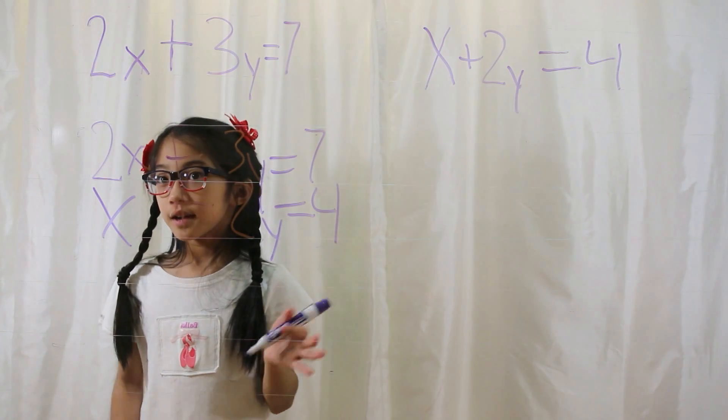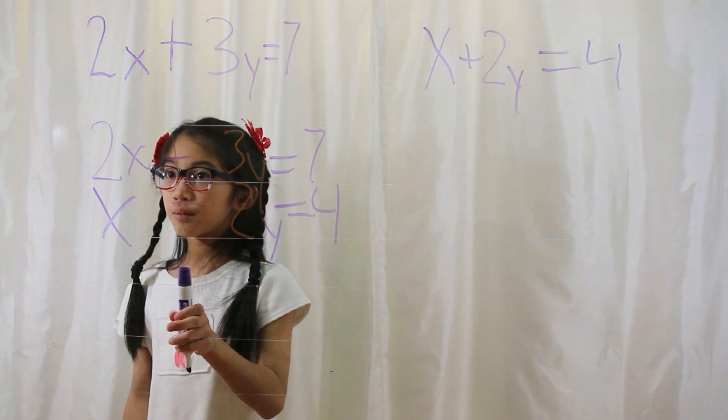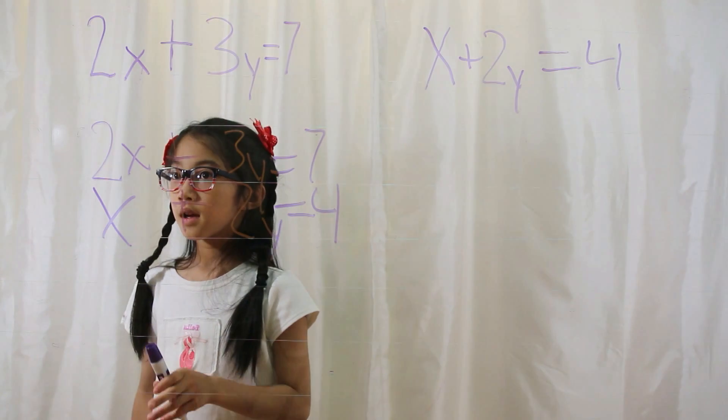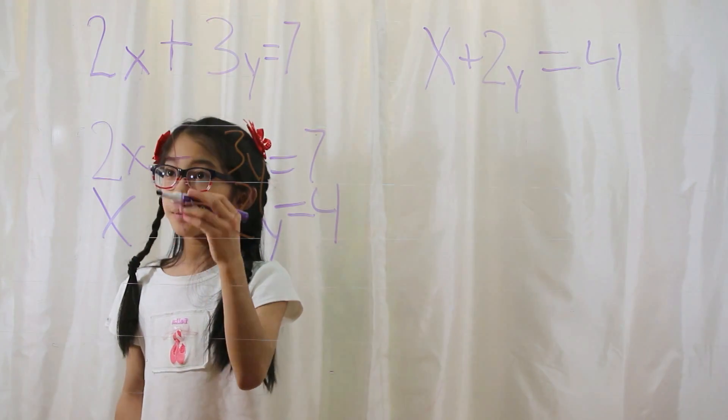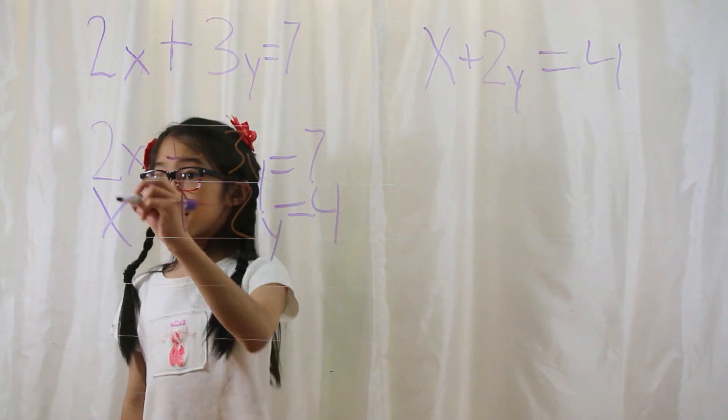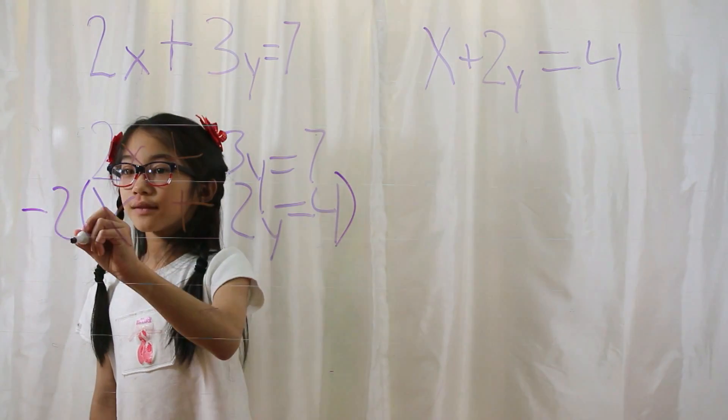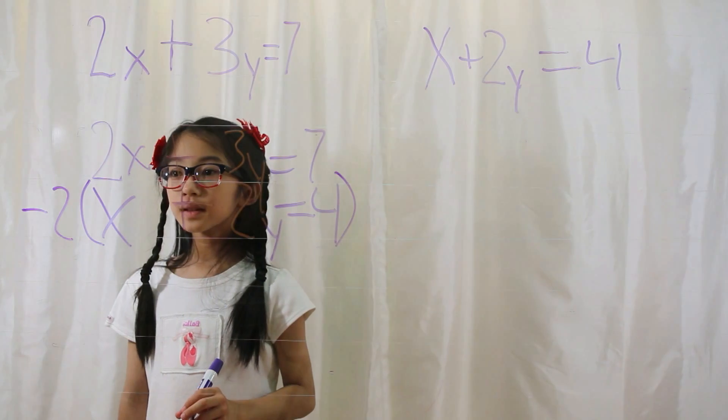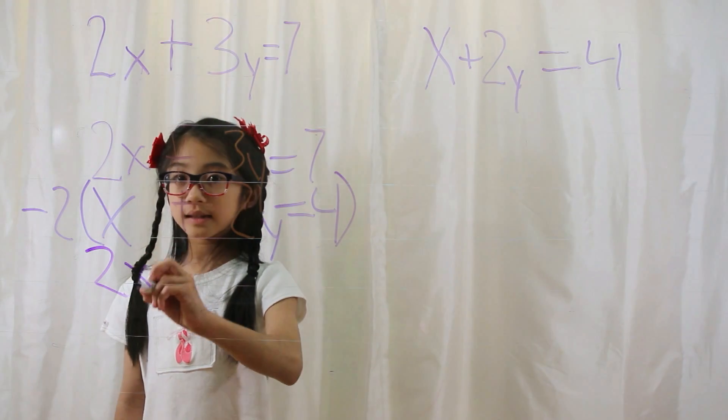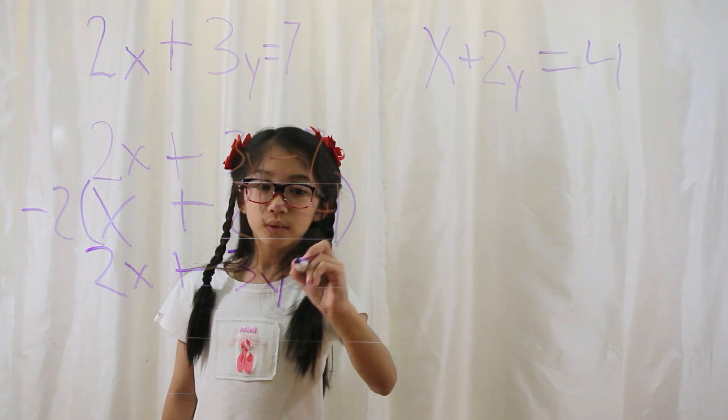First you have to find a number to multiply to x that will make 2x and x cancel. So since 2 is a positive number, you need to multiply x by negative 2. So that would be negative 2. Now you write down your equation, 2x plus 3y equals 7.